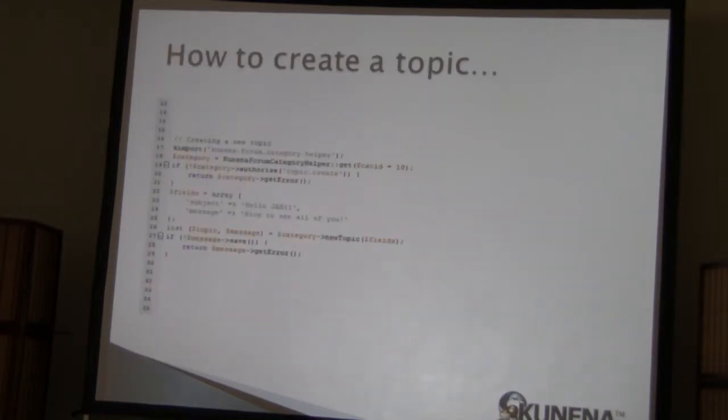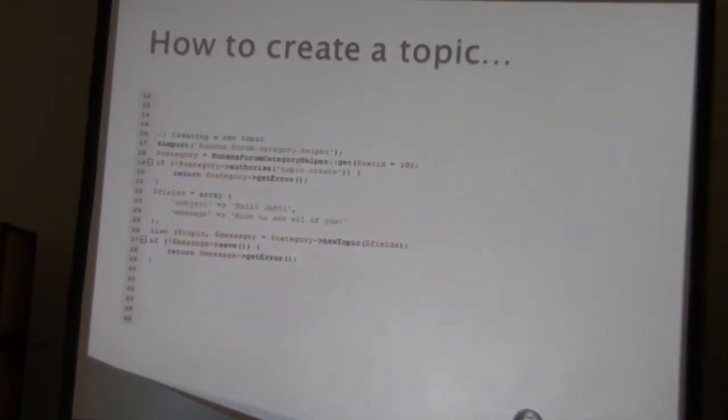How do you create a topic? First you need to authorize the user. Then you call the create topic function — first get the category, authorize yourself, compose the message, say 'create new topic and save it.' That's all. Everything else is done for you.